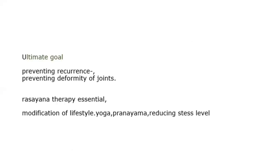What is the ultimate goal of Vata Rekta Chikitsa? For preventing recurrence of Vata Rekta, for preventing deformity of the joints — this is the ultimate goal. For this, the Rasayana therapy is essential. Modification of lifestyle, yoga, pranayama, and reducing stress level — all this will help prevent recurrence.